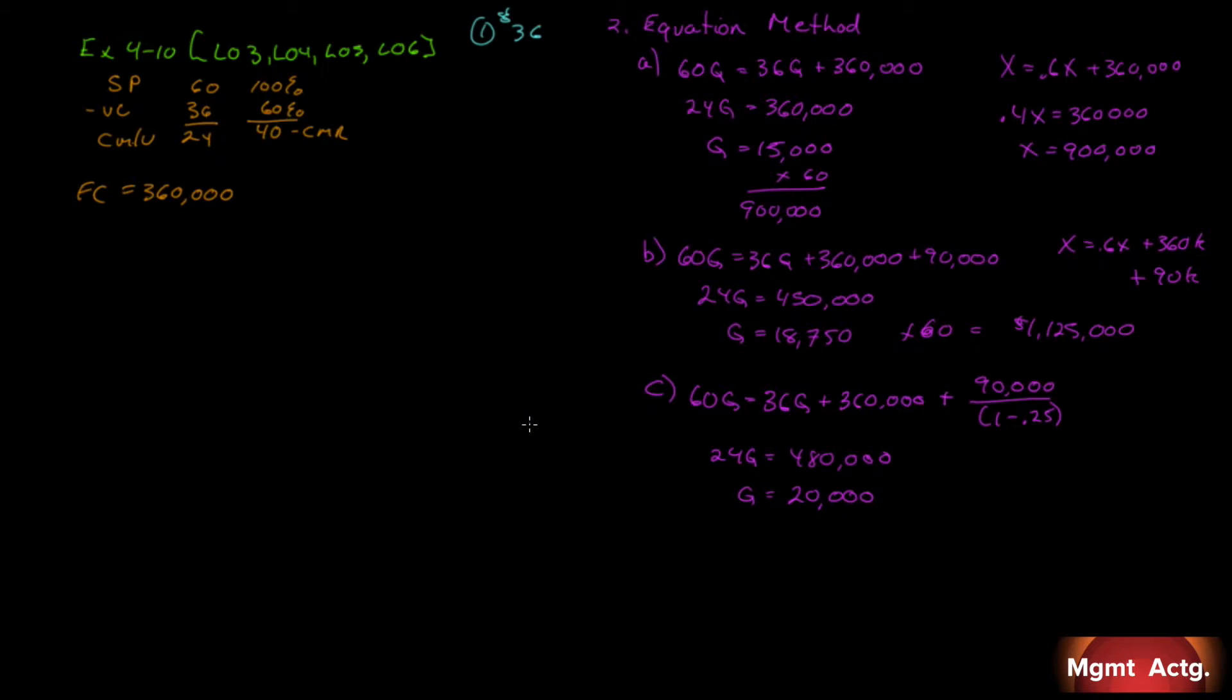And if we need, it doesn't ask for the price, but if we need to know the price, we know that we could just multiply it by our selling price of $60, and we'll get $1.2 million is what we need in sales.